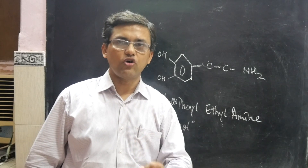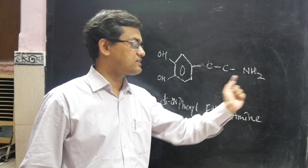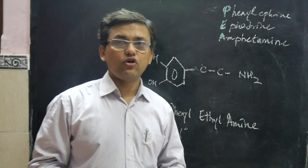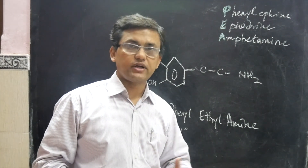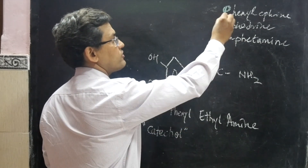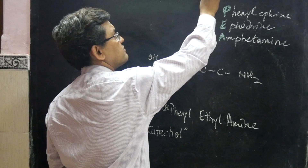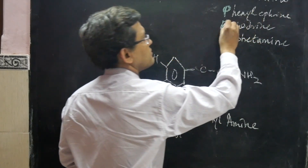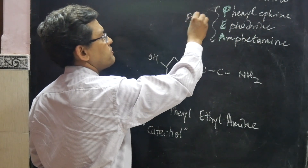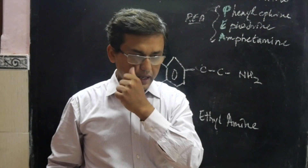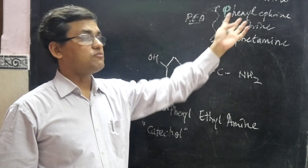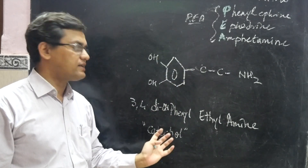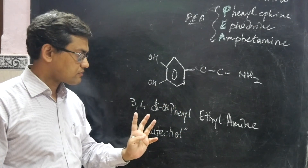For any molecule to be called a catecholamine, it should obviously have an amine, but crucially it should have a dihydroxy phenyl group. A common MCQ question is: which molecules are NOT catecholamines? The easy mnemonic is PEA — Phenylephrine, Ephedrine, and Amphetamine. These molecules don't have hydroxyl groups on the phenyl ring, and therefore they are not technically catecholamines.